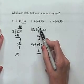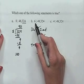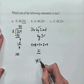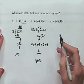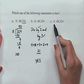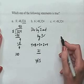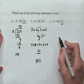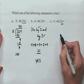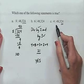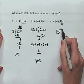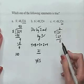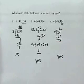Because this number is divisible both by 2 and by 3, which are factors of 6 that have no common factors between them, we can conclude that the number is divisible by 6. Finally, let's look at our last statement: 4 divides 48,324. When looking at divisibility by 4, you look at the last two digits. If 4 divides the last two digits, then it divides the entire number. Since 24 is divisible by 4 with no remainder, we conclude that 4 does divide 48,324. So this is also a true statement.